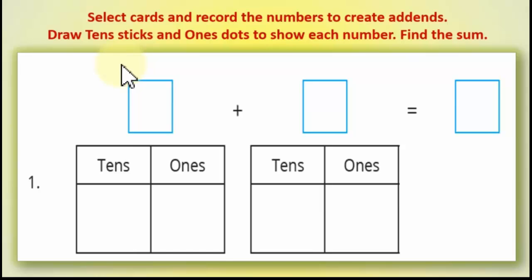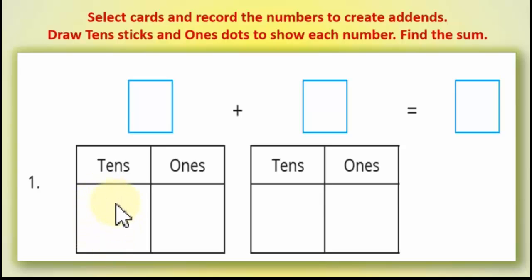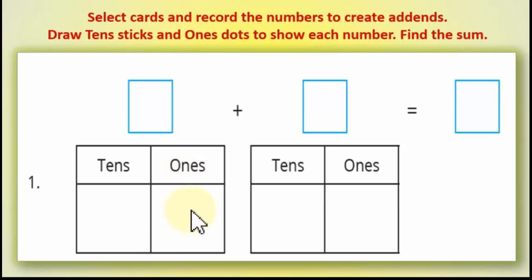طب هنمثلها إزاي بالـplace values بتاعتها؟ بنمثل الـtens بـsticks — عصي بتعبر عن العشرات. والـones ممكن نعبر عنها بـdots أو cubes أو مكعبات أو نقاط، حسب اللي تحبين وحسب الموضوع المتاح والبسيط.